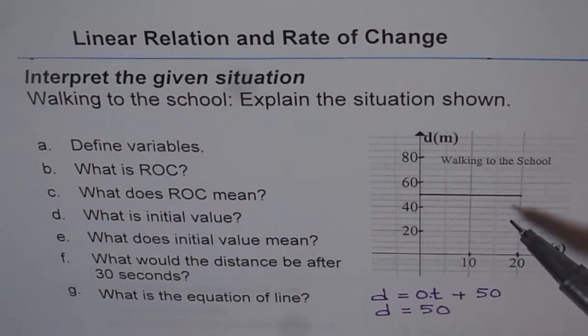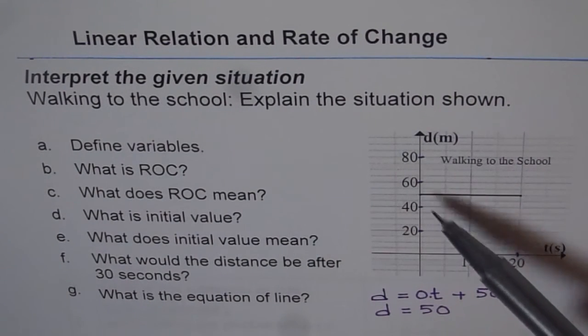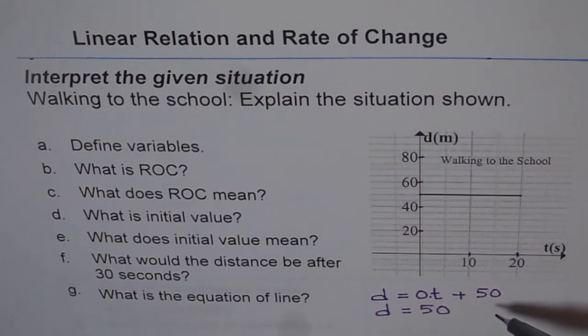A horizontal line represents 0 rate of change. And the equation in the form of y equals mx plus b will not have this variable term at all. It will have just a constant term, the y-intercept. 50 in this case.